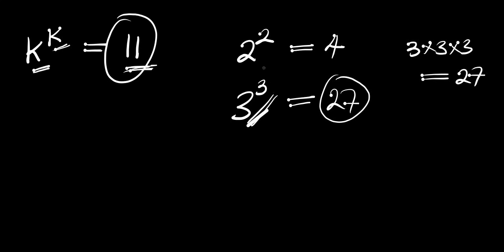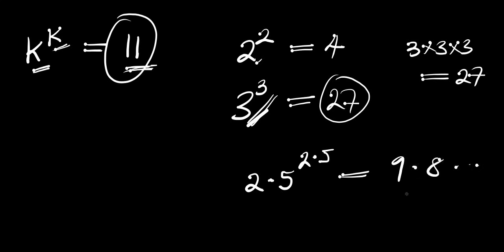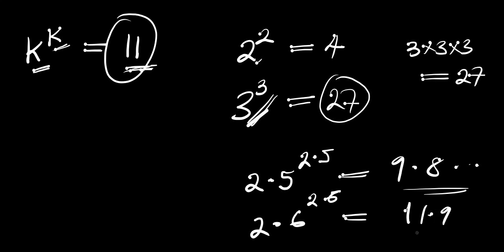So the number is within these two. Try 2.5 raised to the power of 2.5 — this gives you about 9.8 something, which is not up to 11. You increase it again: 2.6 raised to the power of 2.6 gives approximately 12 or 11.9 something, which is also above 11. So you reduce it again — the range is between 2.5 and 2.6. All these are trial and error methods of solving this problem.